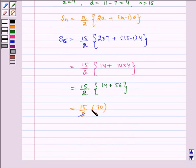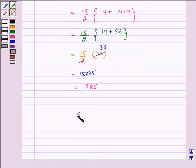This equals 15 × 35 = 525. Therefore, the required sum is 525. I hope you understood the question. Bye and have a nice day.